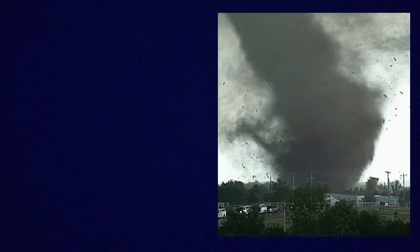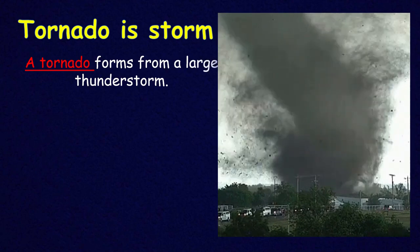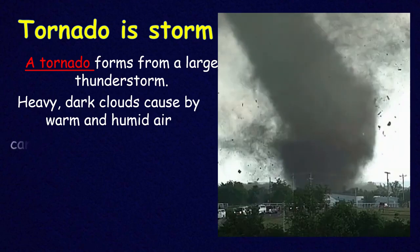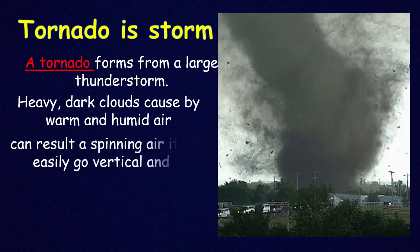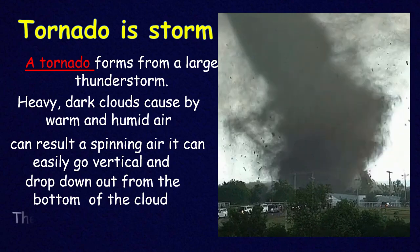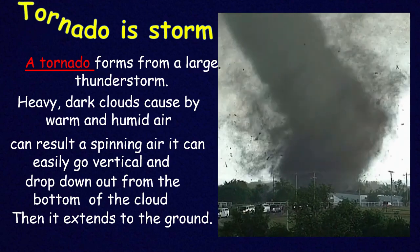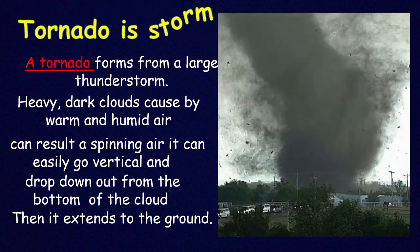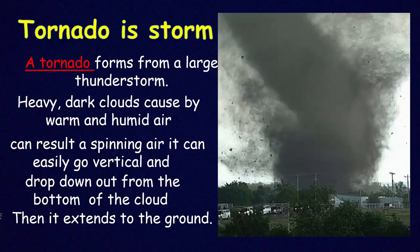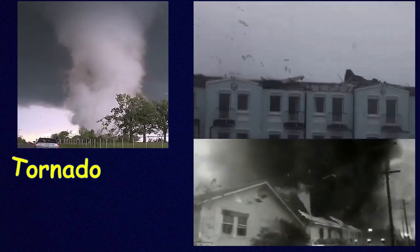Let's learn what a tornado is. A tornado is a storm born from a large thunderstorm. It's a heavy dark cloud caused by warm and humid air that can result in spinning air. It can go vertical and drop down from the bottom of the cloud and extend to the ground.